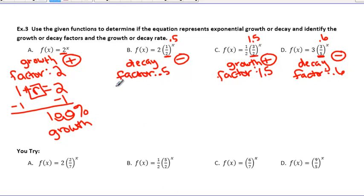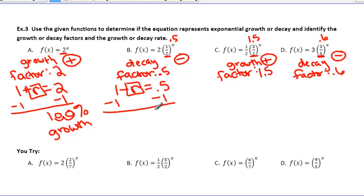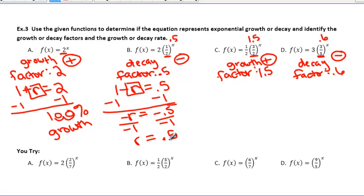Let's take a look at b. We're going to set up our equation: it's always 1, and we're talking about decay, so we're subtracting: 1 − r = 0.5. We subtract 1 from both sides to get −r = −0.5. We divide by −1, because a percent always has to be a positive number, and we get r = 0.5. We move the decimal place over two places and now have 50%. Since we identified this as decay, the answer is 50% decay.